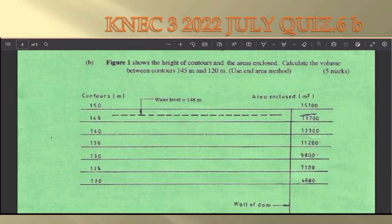We have a contour interval between 150 and 120 meters. Our areas enclosed are given on the right hand of that diagram. We have a water level of 148 meters and a wall of the dam, which describes the whole concept.